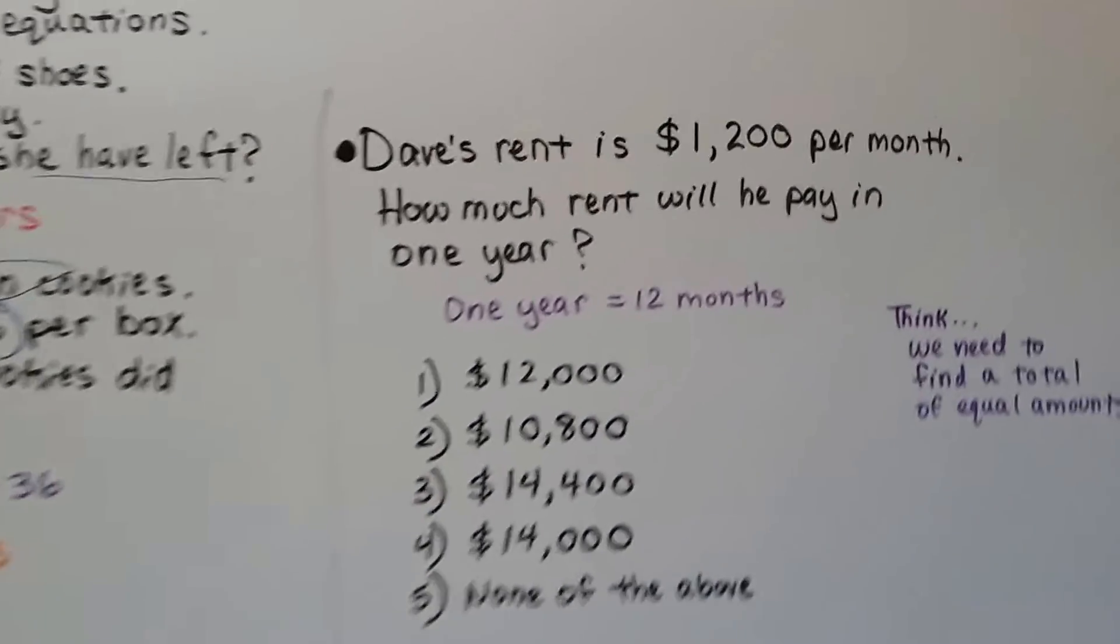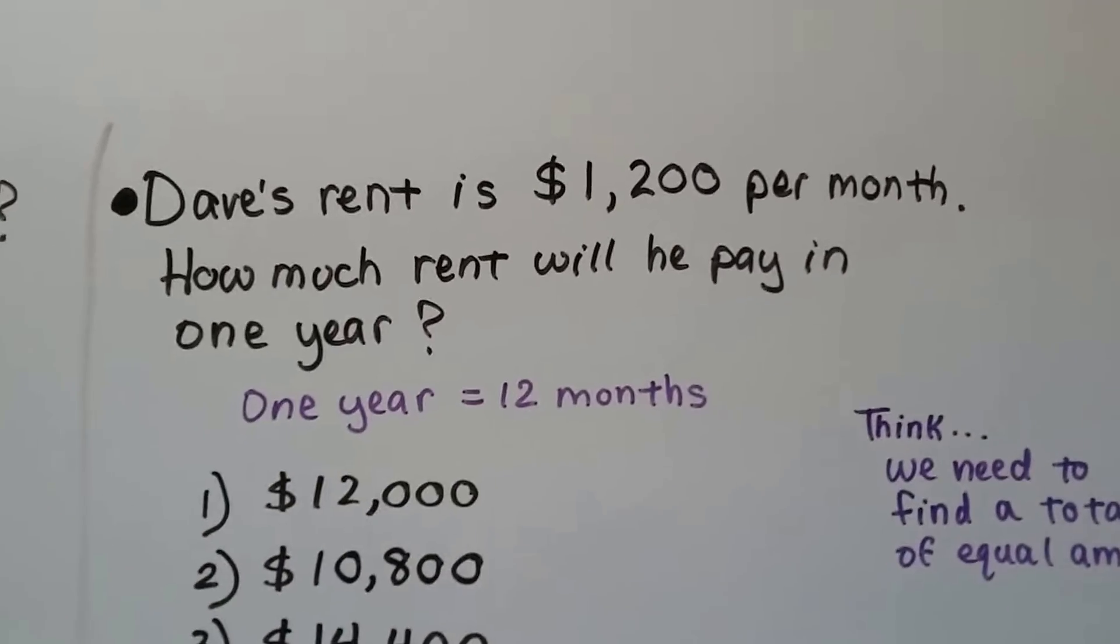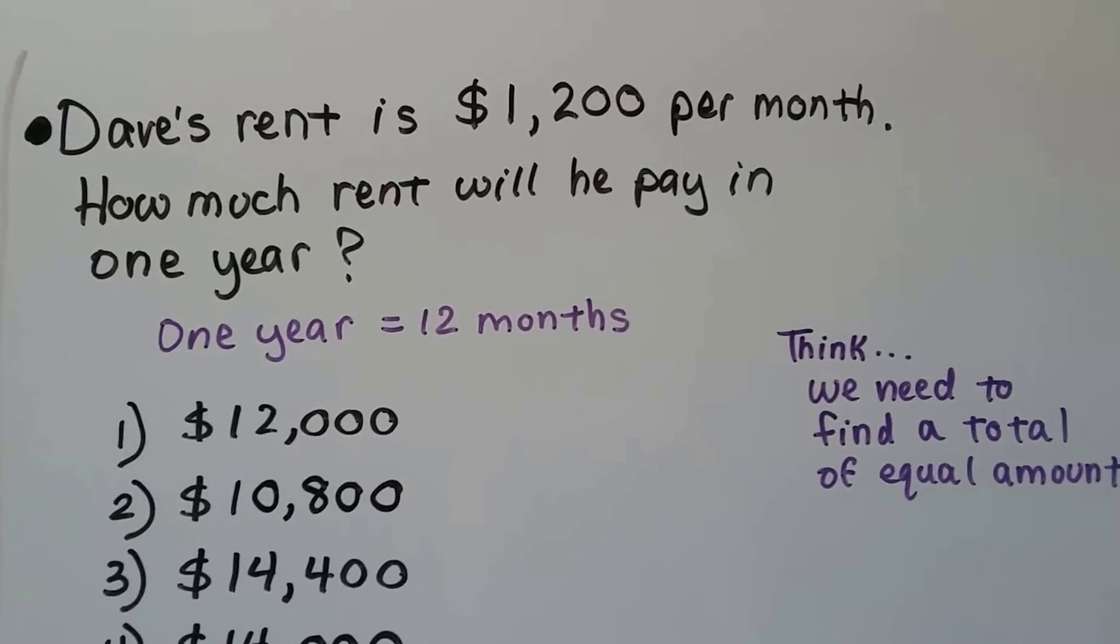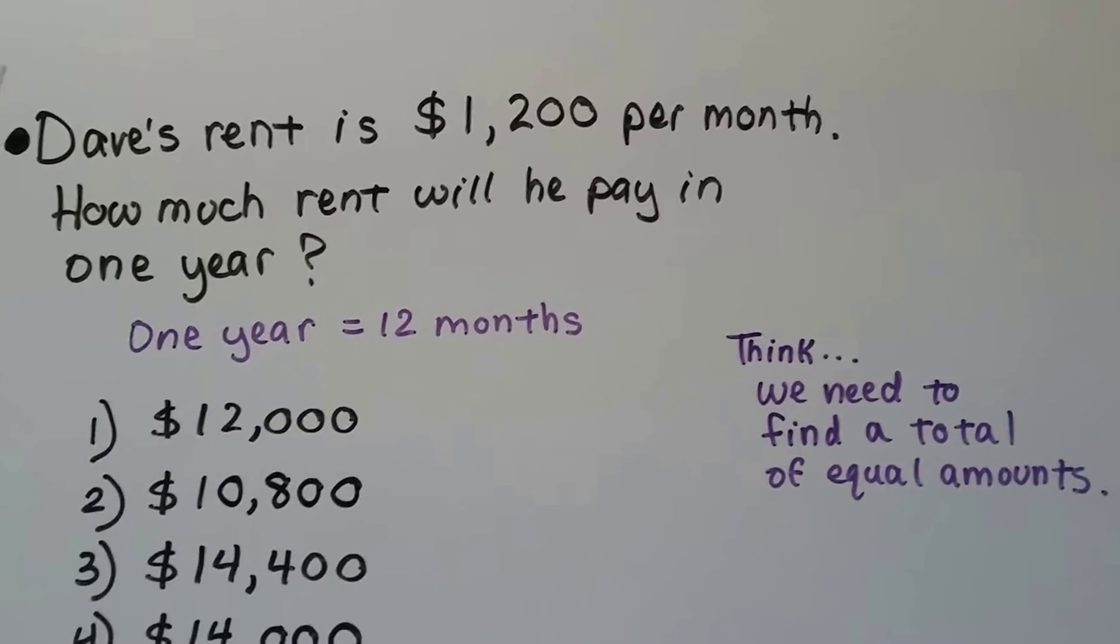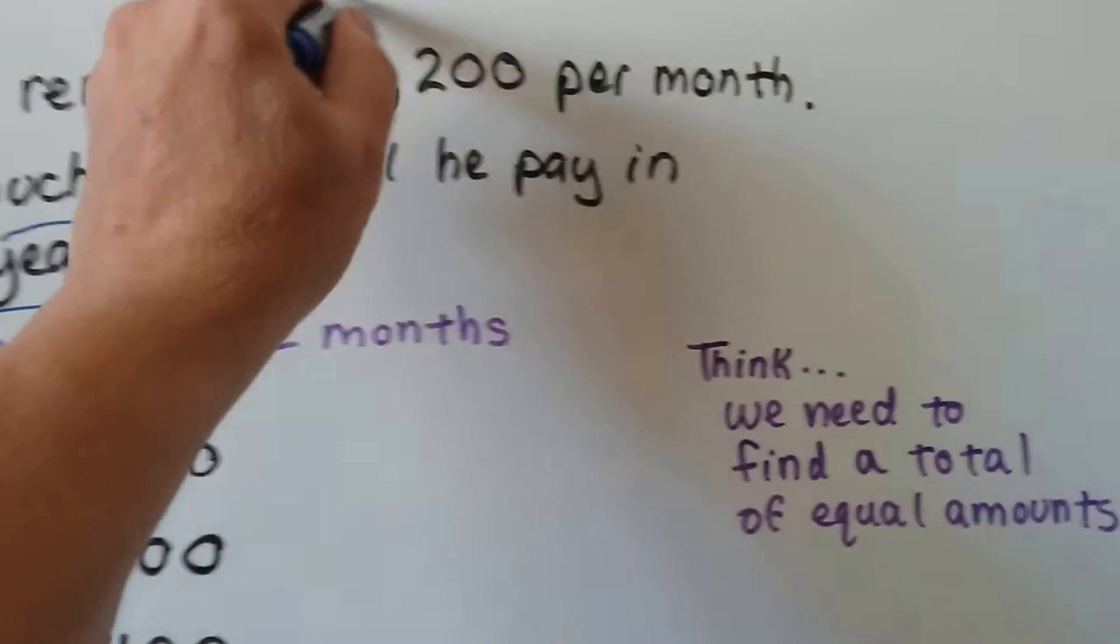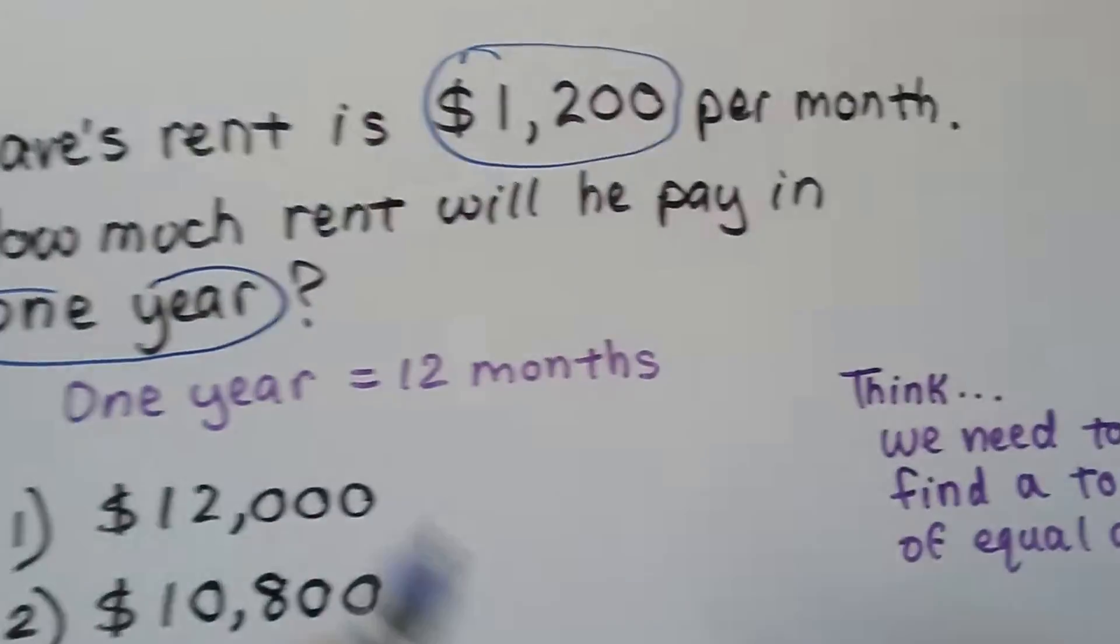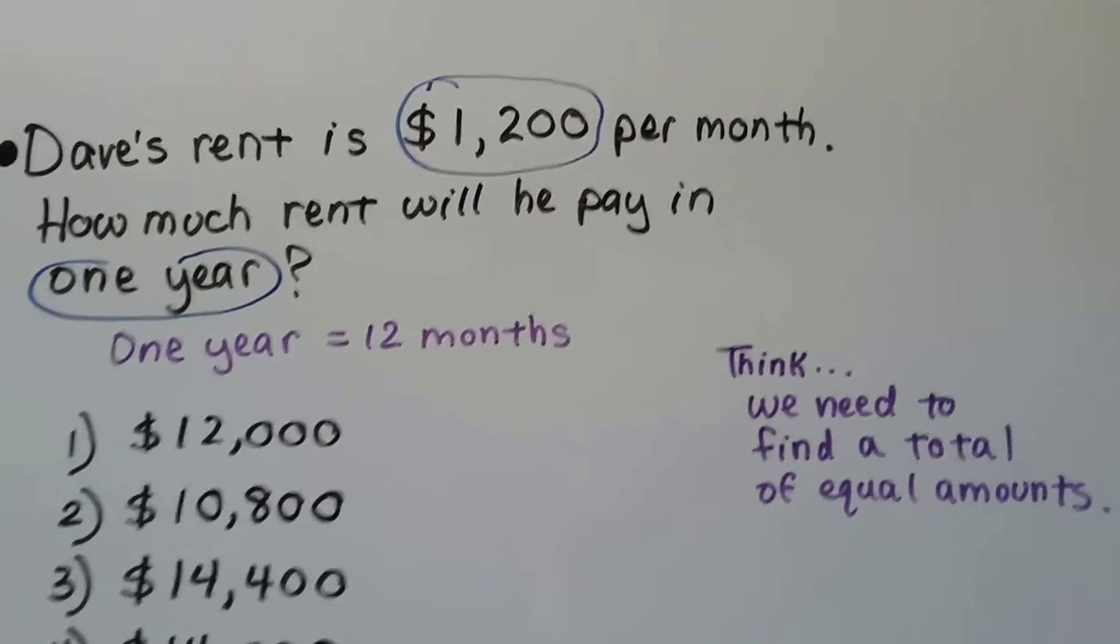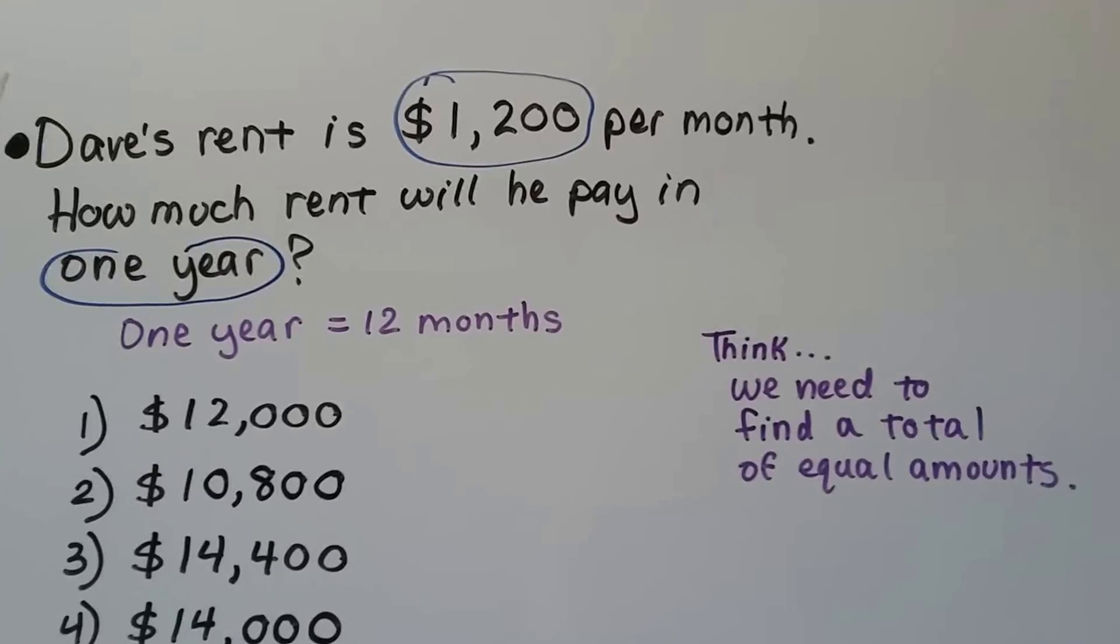Let's take a look at this one. Dave's rent is $1,200 per month. How much rent will he pay in one year? Again, it says one year. We know he's paying $1,200 per month, but one year is 12 months. We need to find a total of equal amounts.